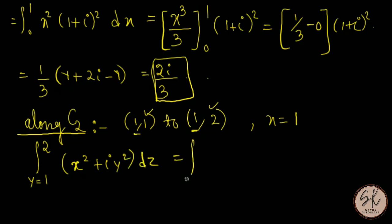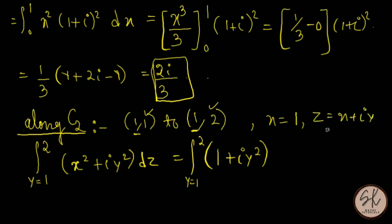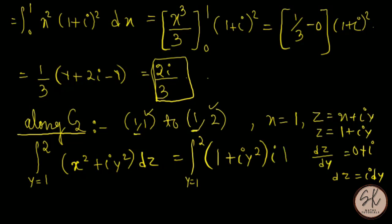From z = 1 + iy, dz/dy = 0 + i = i, so dz = i dy. The integral along C2 becomes the integral from y = 1 to 2 of (1 + iy²) · i dy.